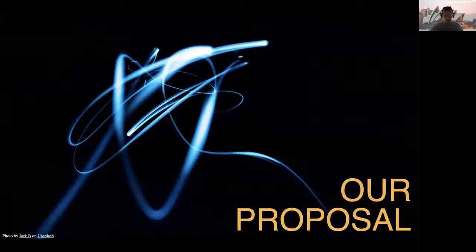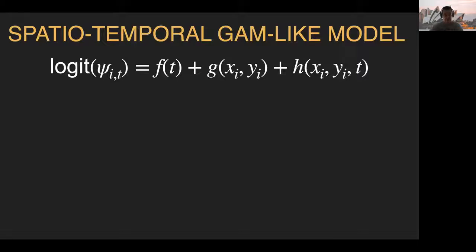Here, we build on these models and propose a GAM-like occupancy model. Briefly speaking, we model occupancy at site i in year t — psi — as a function f of time t, like in the work by Dennis, Isaac, and Houthwaite.